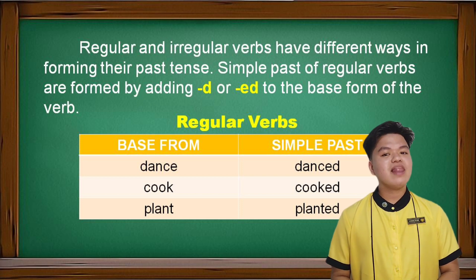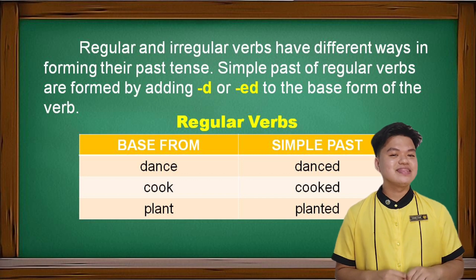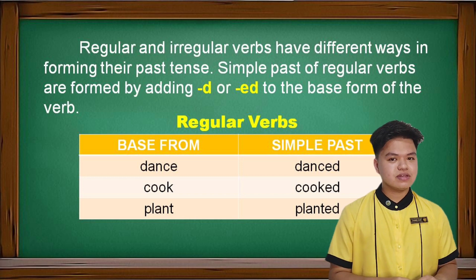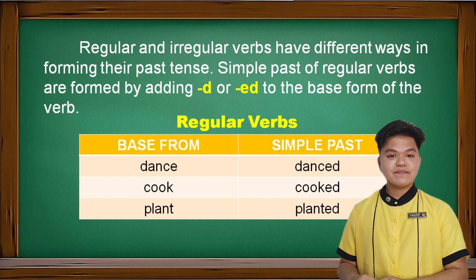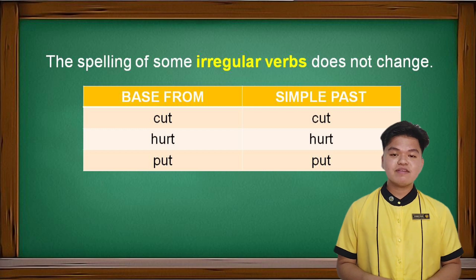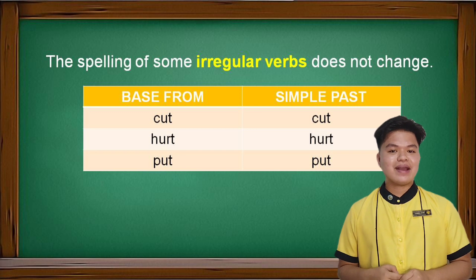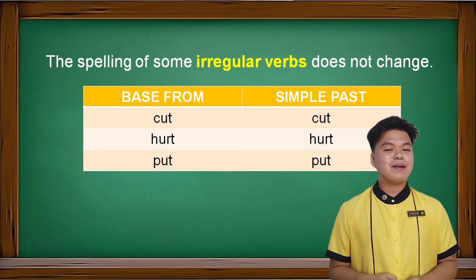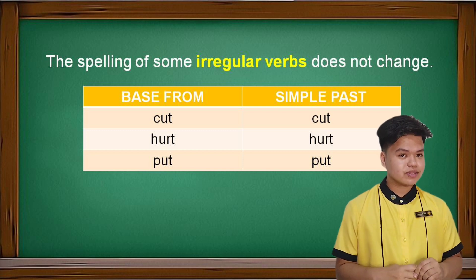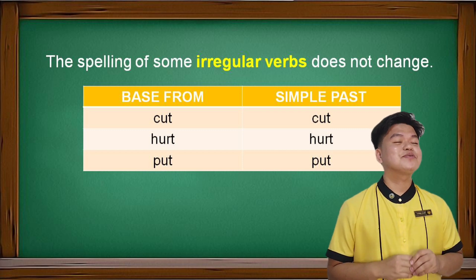For example, in this table: the regular verb 'dance' forms into 'danced,' 'cook' to 'cooked,' and 'plant' to 'planted.' However, the spelling of some irregular verbs does not change. For example, 'cut' stays 'cut,' 'hurt' stays 'hurt,' and 'put' stays 'put.' It does not change.